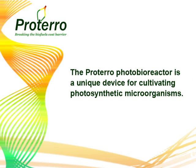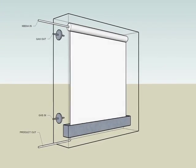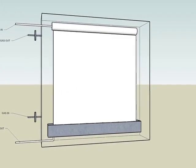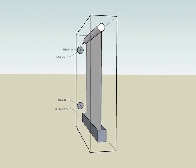The Protero Photobioreactor is a unique device for cultivating photosynthetic microorganisms. The system is protected by a transparent reactor body that provides structural support and environmental isolation for the growth surface.